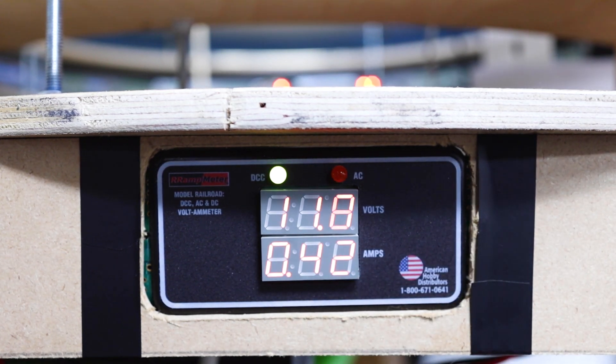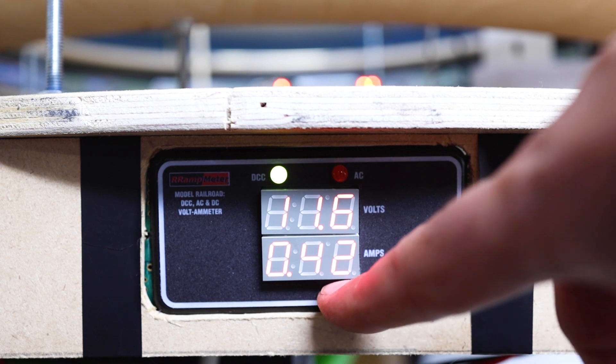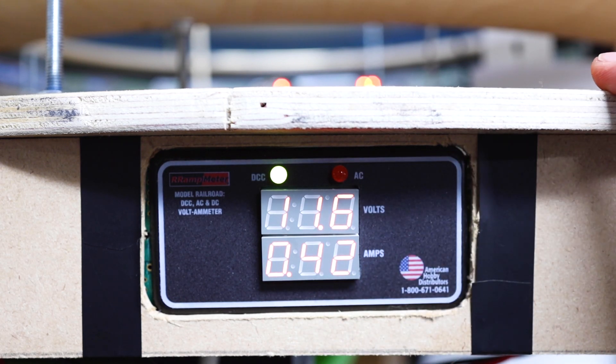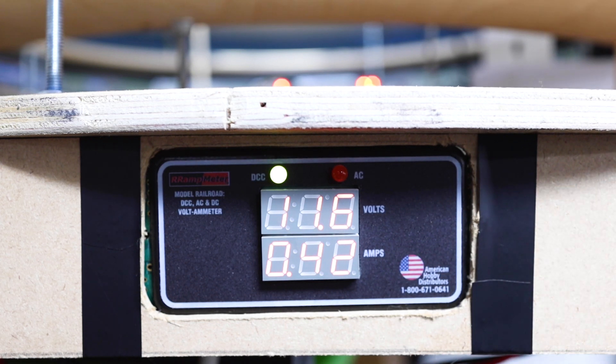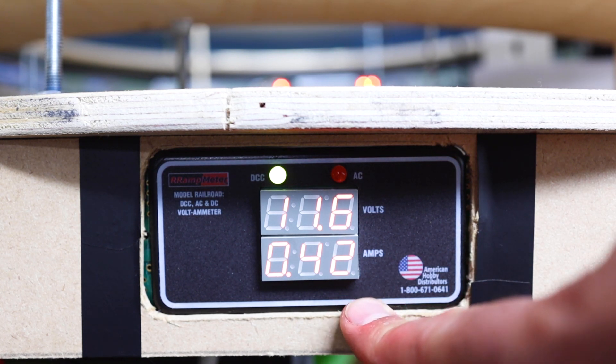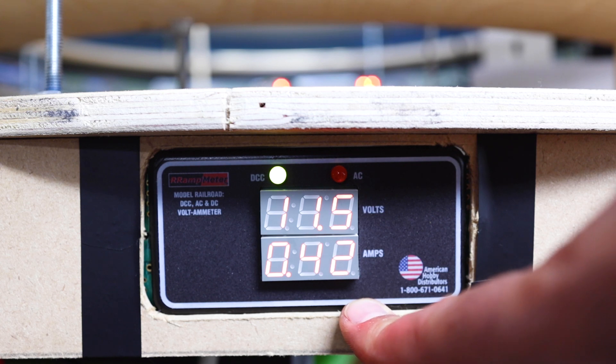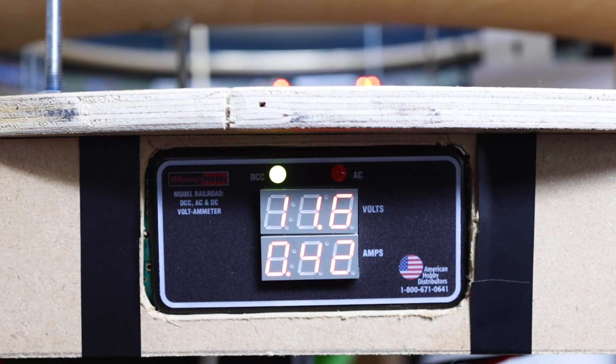Now what I'm going to do is I'm going to fire up one of the sound locomotives and you can just see what difference it makes. At the moment it's on 0.42 amps. So it varies at the moment. So the locomotive is firing up. You see at the moment it doesn't make much difference. It's not having much effect on the amps. It's just the sound decoder loading up the sound files.